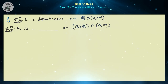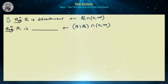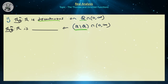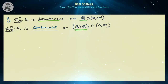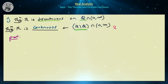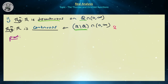We've shown the Thomae function is discontinuous on the rationals, and since the rationals are dense in R, intuition leads us to believe it's discontinuous on all of R. But the next theorem states something surprising: the Thomae function is actually continuous on the set of irrationals. So it's discontinuous on the rationals but continuous on the irrationals — intuition is definitely not happy with that result.